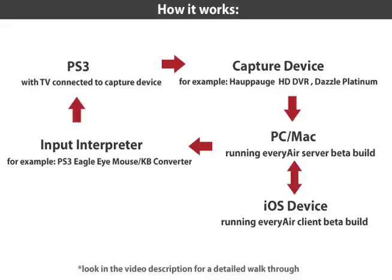There are four pieces needed beyond just a PS3 and an iOS device: you need a computer, a capture device, an input interpreter, and a custom version of Every Air running on the PC or Mac. The capture device streams live video from the PS3 to the computer. Then you connect to that computer using Every Air from your iOS device. The custom build of Every Air knows how to send tap and gesture data to the input interpreter, which then feeds the right button presses to the PS3. Admittedly, this process is a little bit cumbersome, but the results are really impressive.